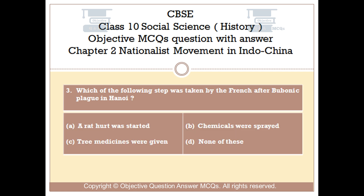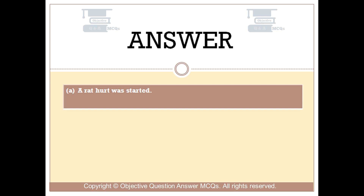Question number 3: Which of the following steps was taken by the French after bubonic plague in Hanoi? Option A: A rat hunt was started. Option B: Chemicals were sprayed. Option C: Tree medicines were given. Option D: None of these. The right answer is Option A: A rat hunt was started.